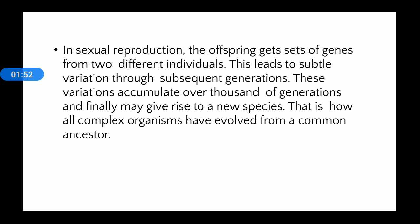In sexual reproduction, the offspring gets sets of genes — or sets of DNA — from two different individuals, from both the male and female parents. This leads to the formation of some variation, and this variation accumulates from one generation to the next. Over generations, this variation can lead to the formation of a new species, similar to the evolution of humans from an ape-like ancestor.